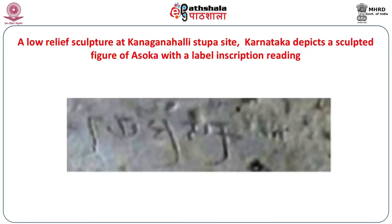From Kanagannahalli in Karnataka, a stupa has been excavated, and in the Kanagannahalli stupa we get an inscription which refers to 'Raya Ashoka.' This states how Ashoka actually stayed in the memory of the people. You can see the portion of the inscription engraved just above the low relief panel at Kanagannahalli, reading in Brahmi characters of the second century AD: 'Raya Ashoka.'